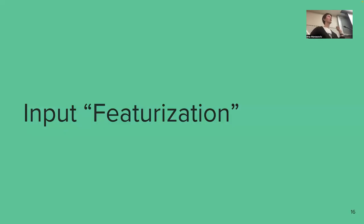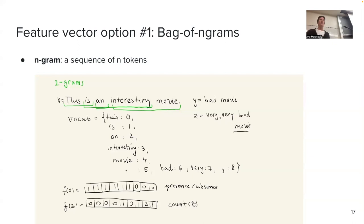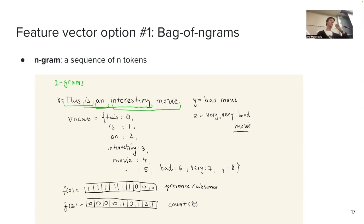Now we have our input string tokenized — a list of strings where each is a subword — but we're still not at a vector with numerical values. That's what we do next with input featurization. Features for us are whatever ends up in the vocabulary, and the vocabulary size determines the number of features. An alternative way of thinking is that the values in the feature vectors are features, which is not wrong — but in this course, features are going to be whatever ends up in our vocabulary.